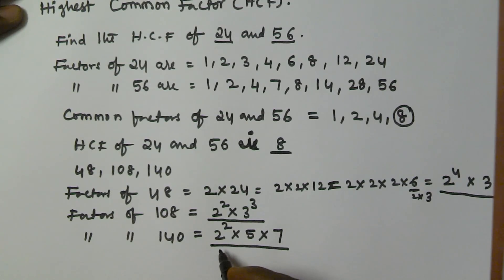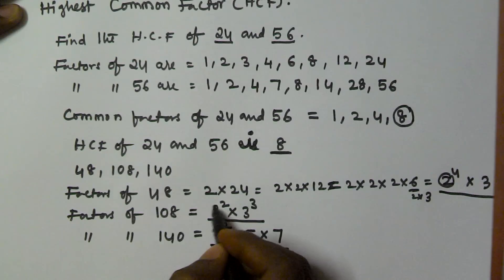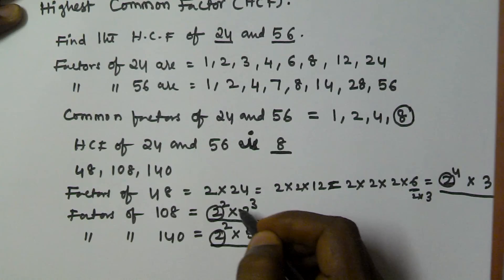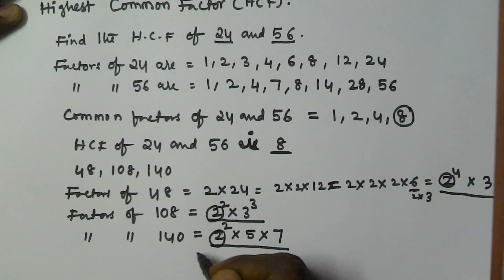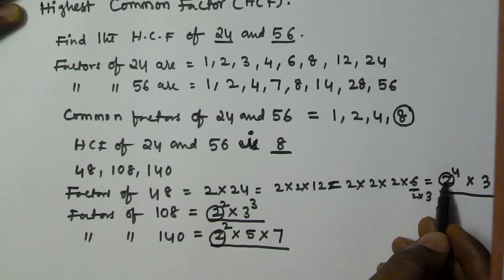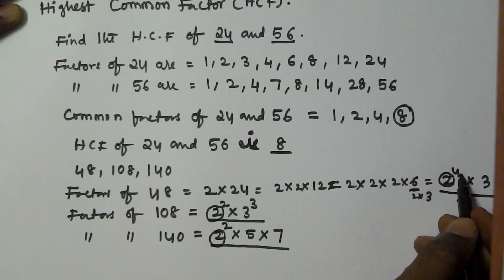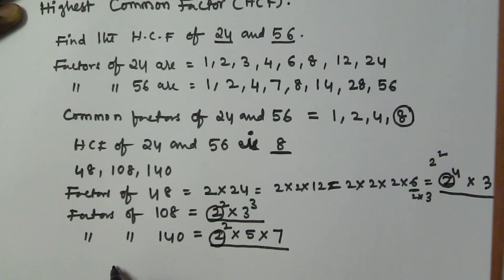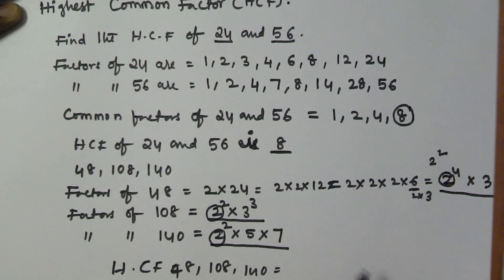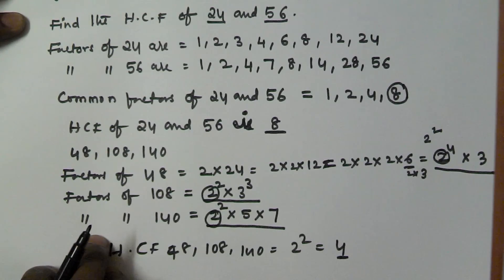The common factor for all three numbers is only 2. The factor 3 is common only to 48 and 108, so we ignore it. We also ignore 5 and 7 since they are not common to all three. Looking at the powers of 2: we have 2 to the power of 4, 2 squared, and 2 squared. The lowest common power is 2 squared, so the HCF of 48, 108, and 140 is 2 squared, which equals 4.